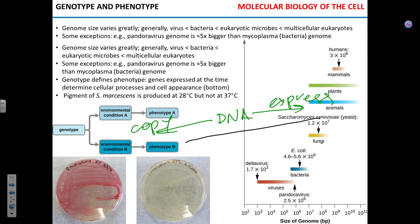It becomes more of a philosophical question whether viroids are independent microorganisms or just infectious RNA structures. The delta virus genome is really, really small — about 1,700 nucleotides. The largest genomes are found in some plants. Humans have a pretty big one: 3 billion nucleotides.